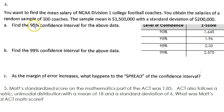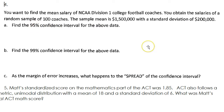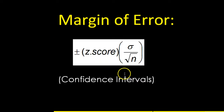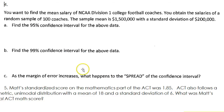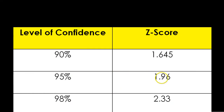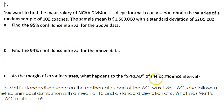Because they're mentioning the confidence level — 95% — we know we're going to use the beefy formula. And specifically, since we're doing the 95% confidence level, we're going to use a z-score of 1.96.